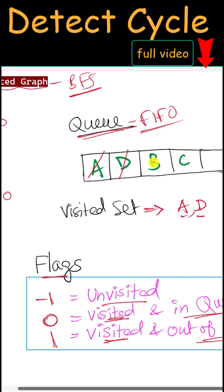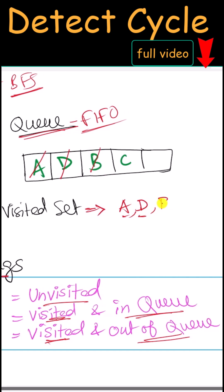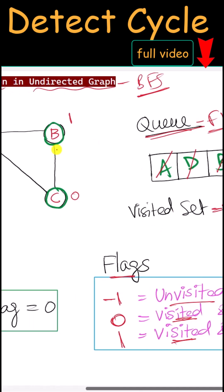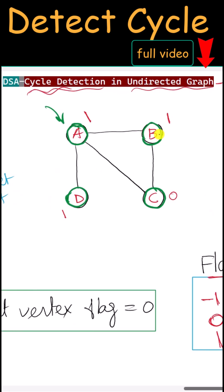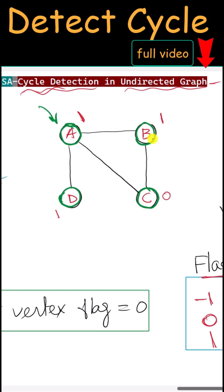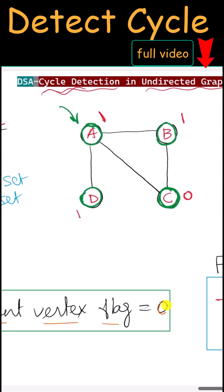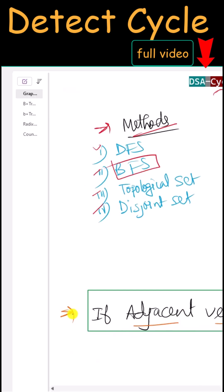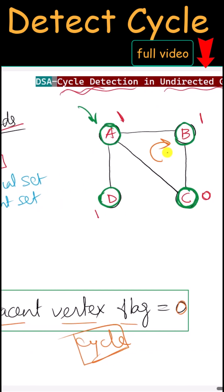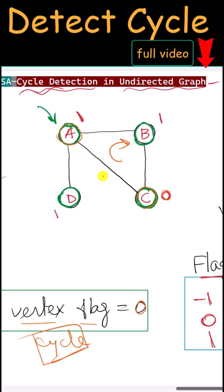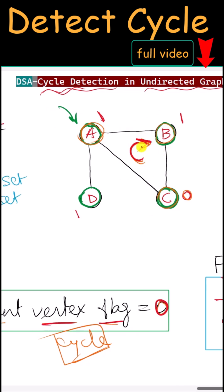Now we remove B from the queue and put it into the visited set, so its flag is modified to one. We look for adjacent vertices of B. A is already visited. The next adjacent vertex is C, and its flag is zero. Because the adjacent vertex flag is zero, we have found a cycle. This is our condition to find a cycle in an undirected graph using BFS — a flag of zero means this vertex is already visited by some other vertex, so there is a cycle.